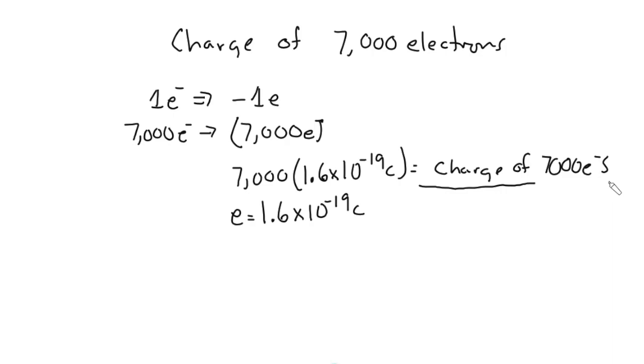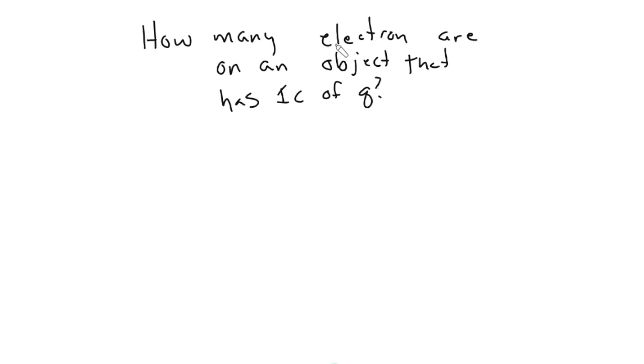When I want to go back the other way, things can get a little bit more confusing. Now we can say how many electrons are on an object that has one coulomb of charge. So now, instead of me giving you the electron amount and having you go to charge, I'm going to go the opposite way. So now I say I have one coulomb of charge. How many e's is that?